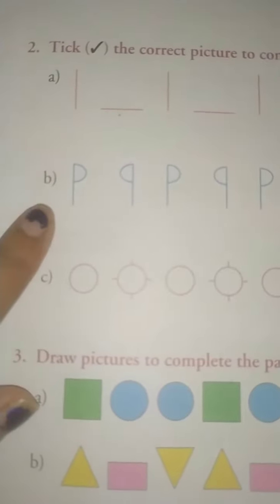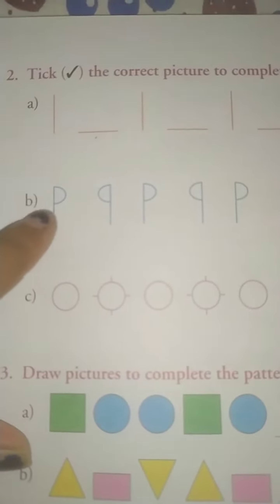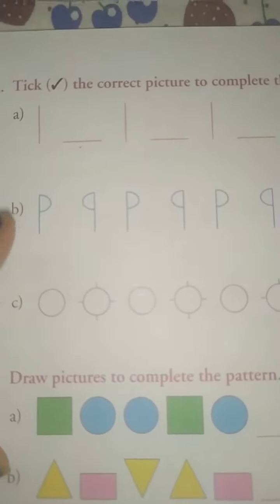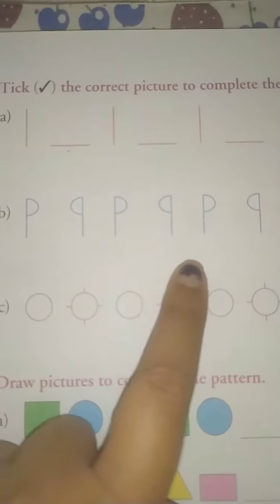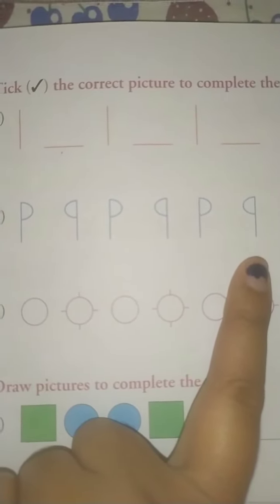Come to the next number. P, this set is like a P and this set is like a Q. So P, Q, P, Q, P, Q. Now you tell me what would be the next set?